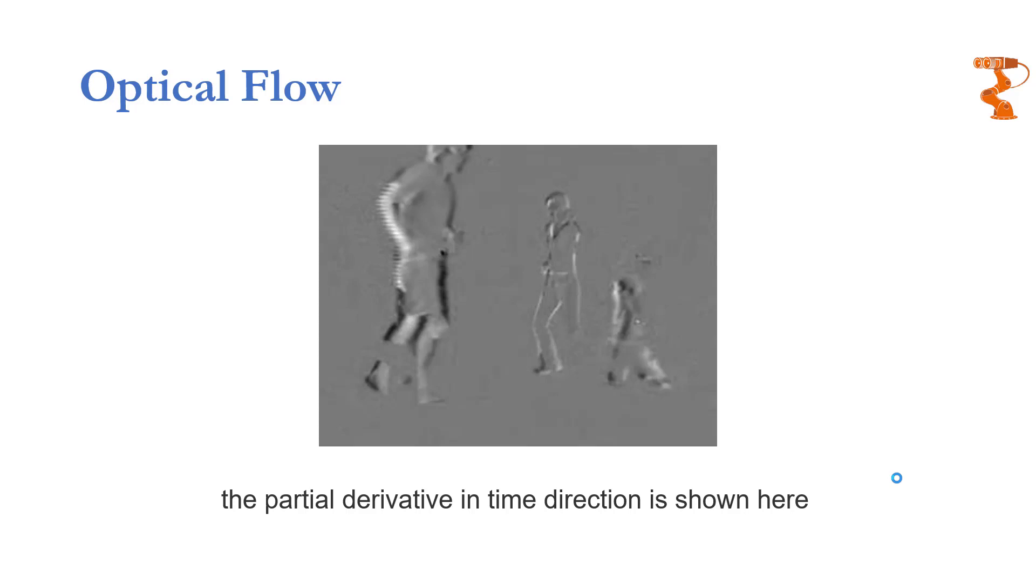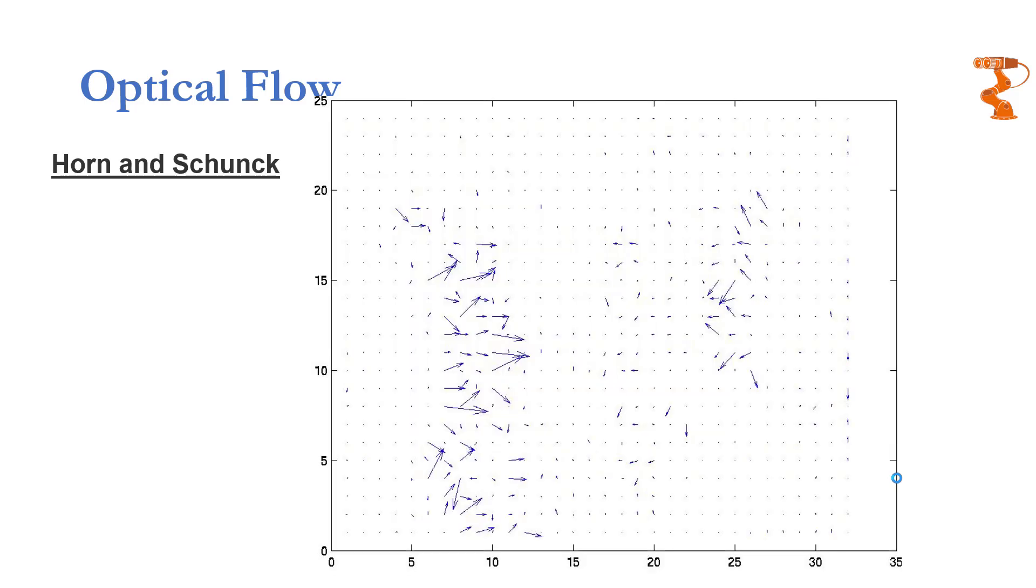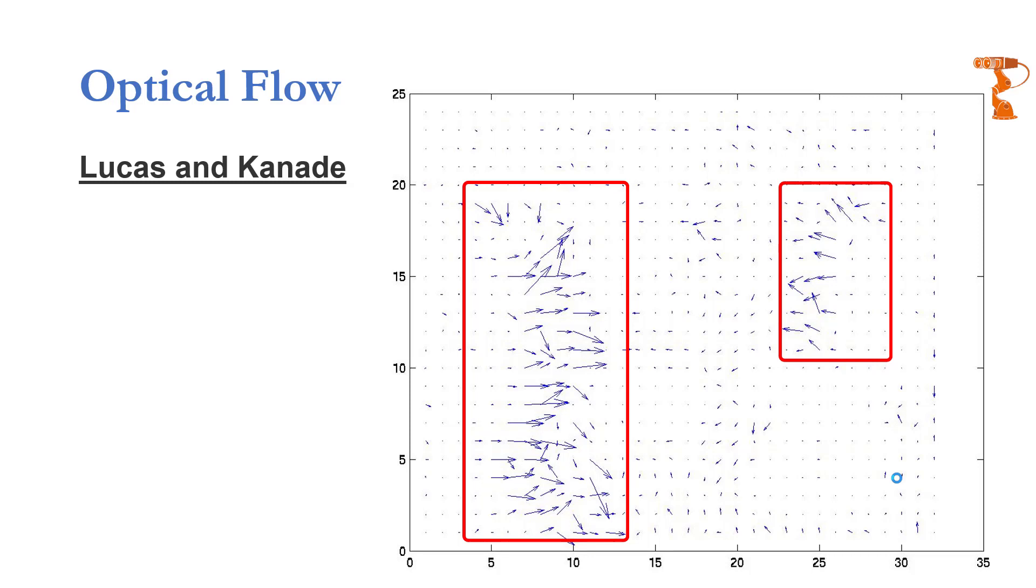To keep the difficulty level to beginner, I am skipping the mathematical details to arrive at these flow fields. Using Horn and Schunck method, the shown flow field will be generated that shows motion of the points in these regions. The vectors give direction as well as magnitude of motion of these points. Lucas and Kanade method generates a much more stable flow field as shown over here.